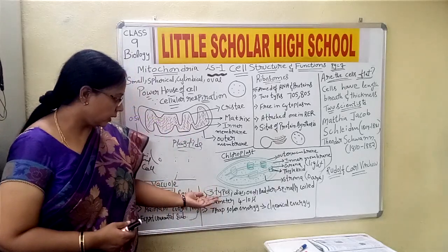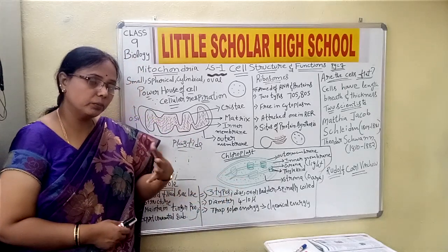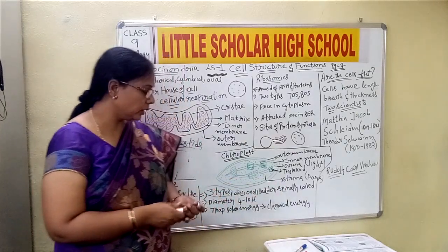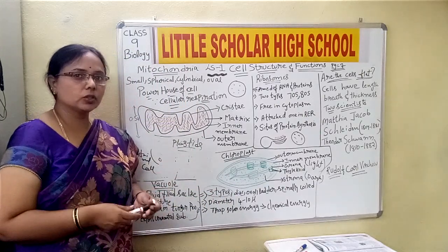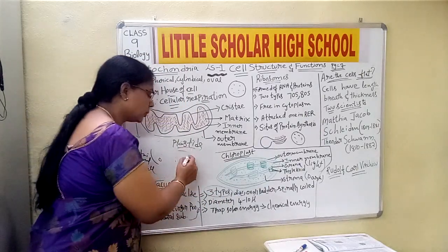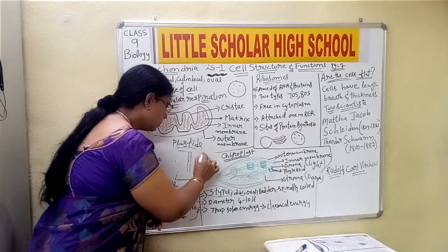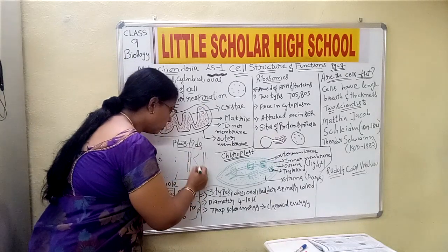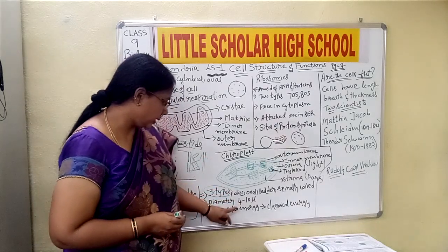We have seen that the chloroplast appears in different shapes — that is disk, ladder, and spirally coiled. In many organisms like algae and spirogyra, it may look spirally coiled. So this is about the chloroplast and its three types.